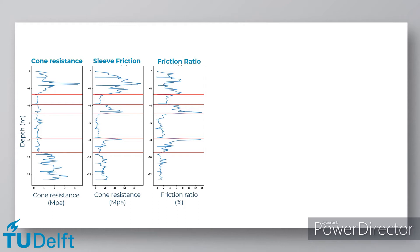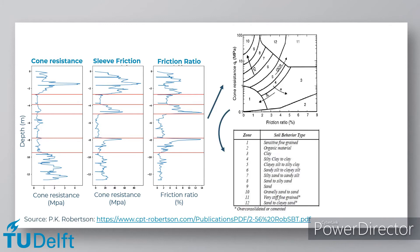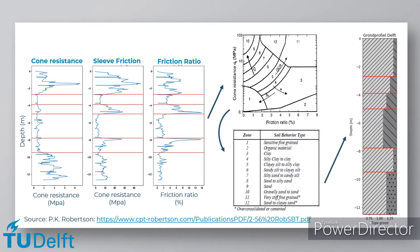Let's take a quick look at an example of possible measurements from a CPT experiment. On the left, the results from a CPT can be seen, where the cone resistance, sleeve resistance, and the subsequent friction ratio are plotted over depth. The red lines indicate the different boundaries between soil layers. Note how each soil layer has its own characteristic average friction ratio. The combination of the friction ratio and cone resistance is used to identify layers and soil type per layer using the Robertson graph. Based on the numbers in the chart, the corresponding soil type can be determined, and the soil type can then be used to plot the soil profile over depth.